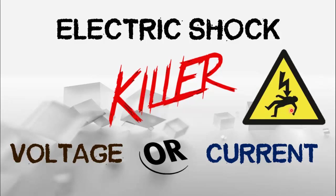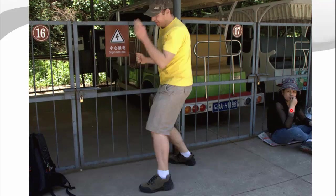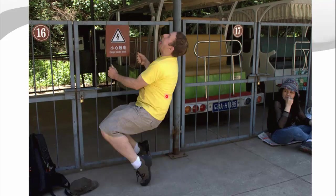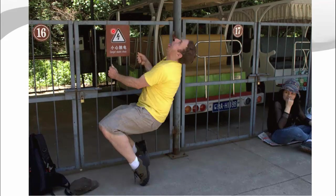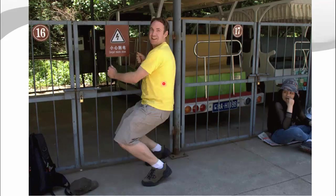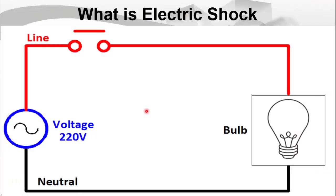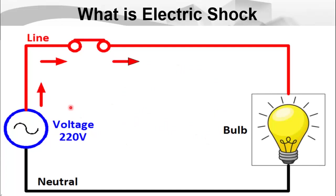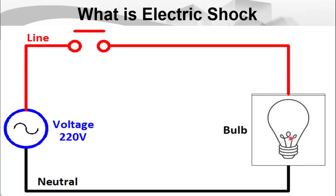Before answering these questions, we will have to go through some technicalities — what causes an electric shock. As the person comes in contact with the metal that is connected with the phase conductor, he experiences an electric shock. Just refer to a basic electrical circuit. Here we have the voltage source and these arrows are representing the flow of current, and this is the load or the resistance.